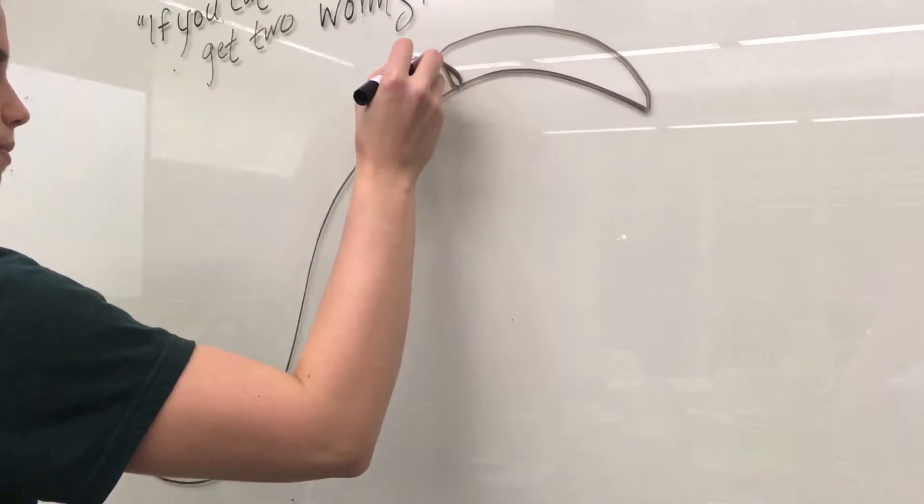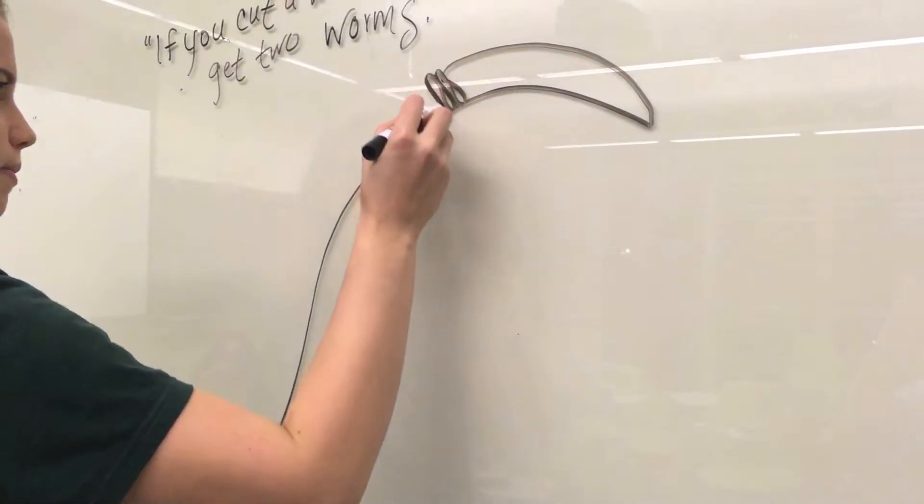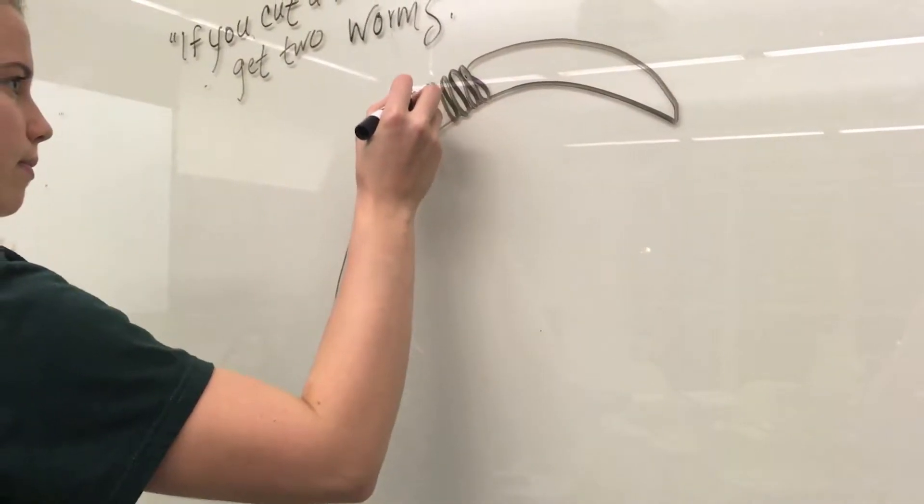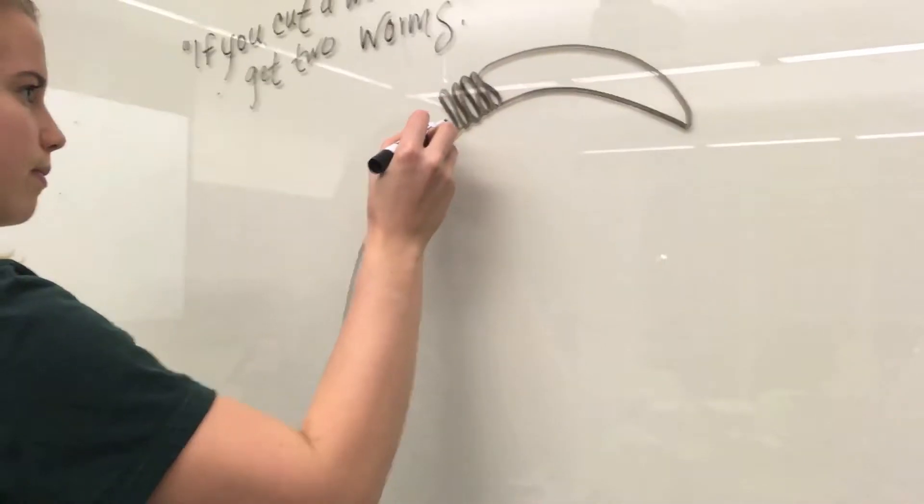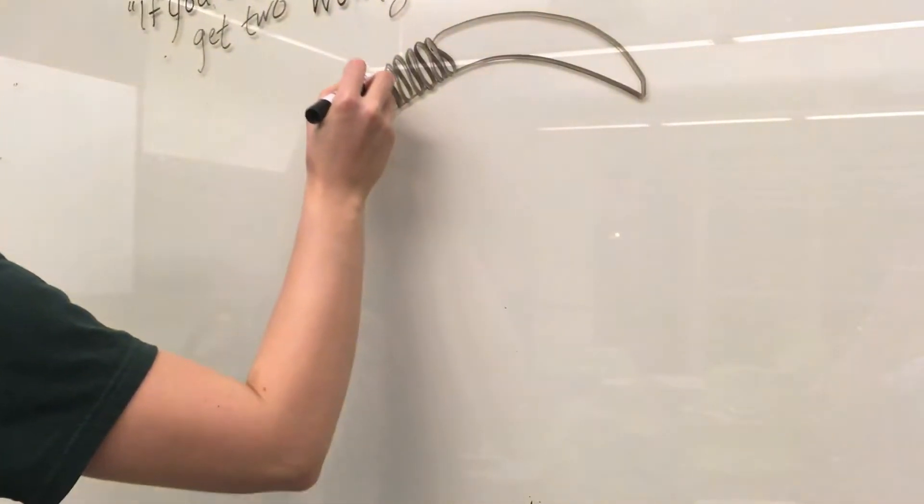The earthworm's body consists of around 150 rings, called annuli. The mouth is at one end, followed by 31 rings and a thickened saddle called the clitellum. The clitellum secretes a sticky, clear mucus that keeps the worm moist, allowing it to breathe by absorbing oxygen through its skin.